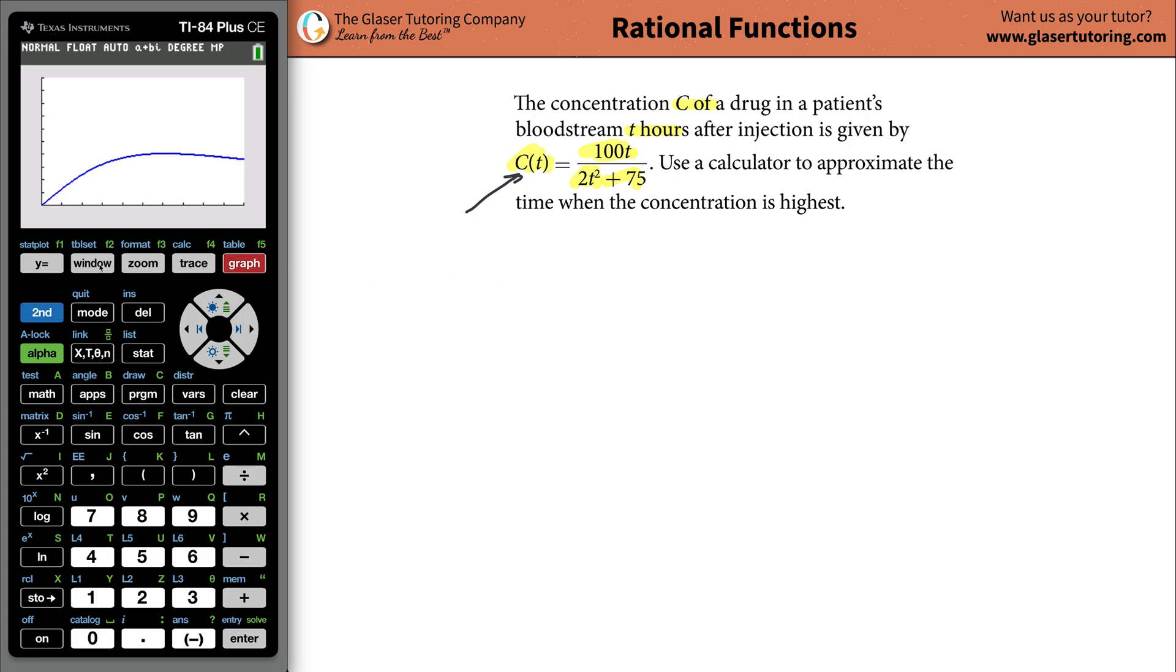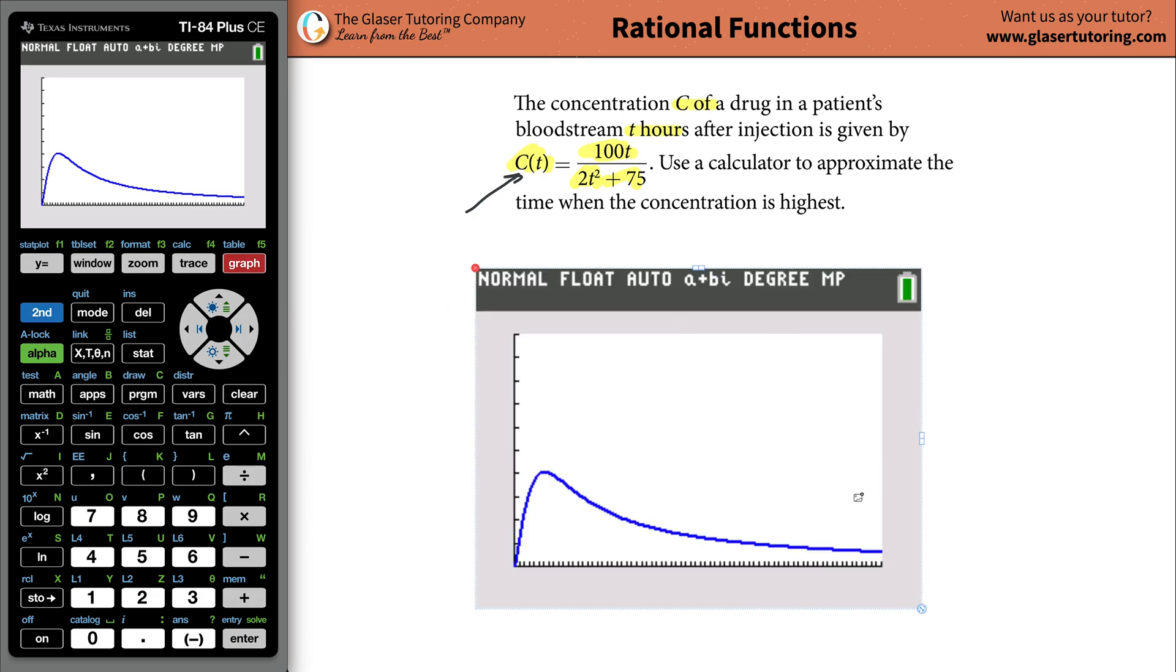So why don't we go to our window, and we're going to adjust the X max a little bit. Let's say it goes to maybe 50, so 50 hours, right? 50 hours would be a little bit over two days. Now you can see this graph is starting to take a little bit better shape. And maybe we'll go to 75 hours or something like that. So here's the graph.